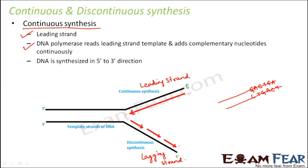Since the template strand has a 3' end on one side, the new strand will have a 5' end on that side, because they must be anti-parallel to each other. So the new strand runs 5' to 3', and DNA is always synthesized in the 5' to 3' direction, as indicated by the red arrow denoting the direction of DNA synthesis.